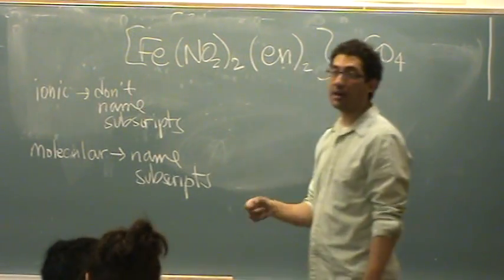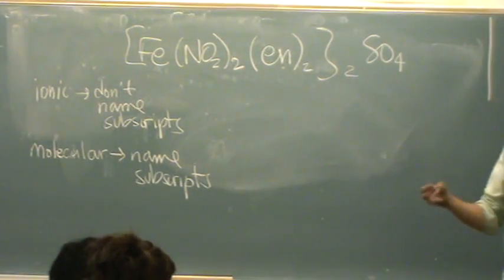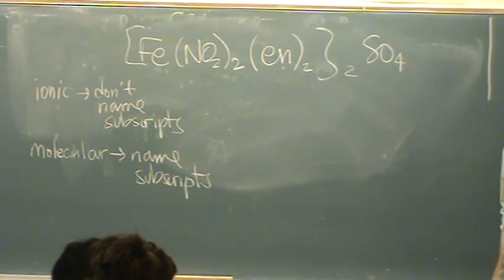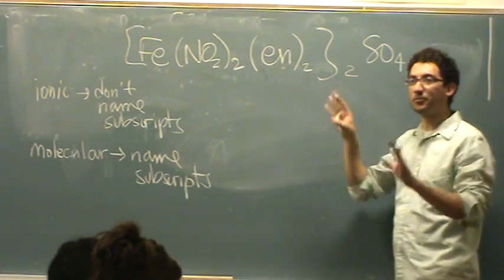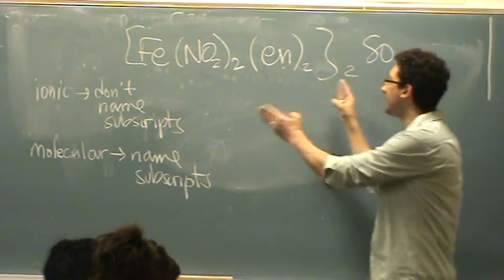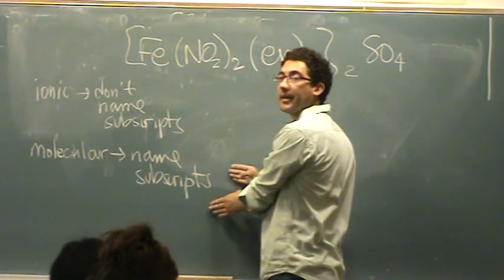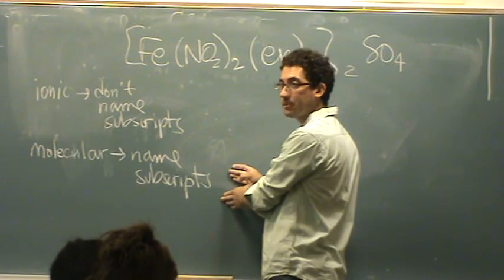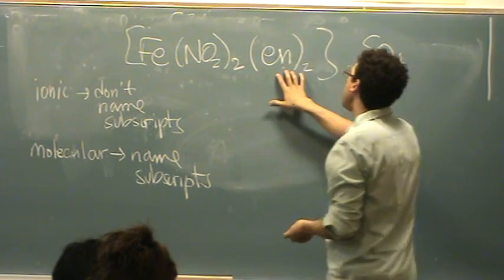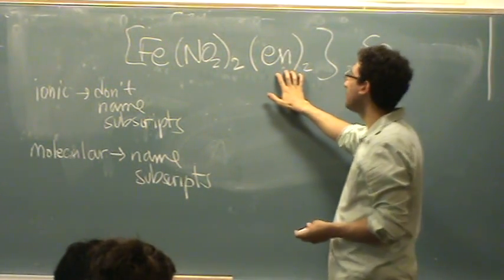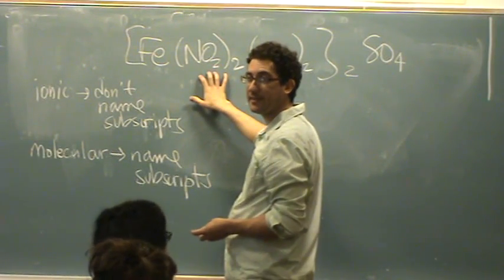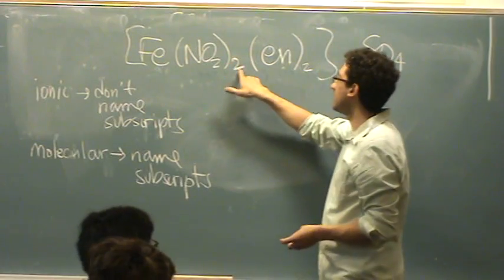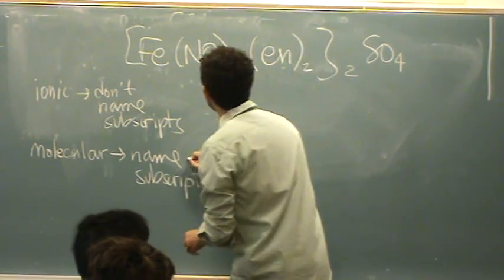So for example, carbon dioxide, CO2, you don't say carbon oxide. So the problem with the transition metals, you do both. In the brackets, you consider it molecular, where you name all subscripts. So this is bisethylenediamine dinitrido-N, you're naming these two right there. So that goes with this.